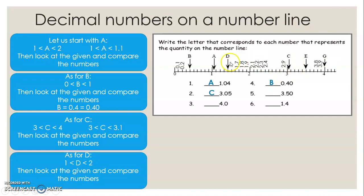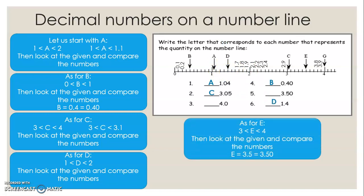As for D, D is between 1 and 2, at position 1.4 — this is D. As for E, E is between 3 and 4, at position 3.5. I have 3.50, which equals 3.5, so E equals 3.50. As for G, G equals 4, which is equal to 4.0, because zeros after the decimal point are useless.